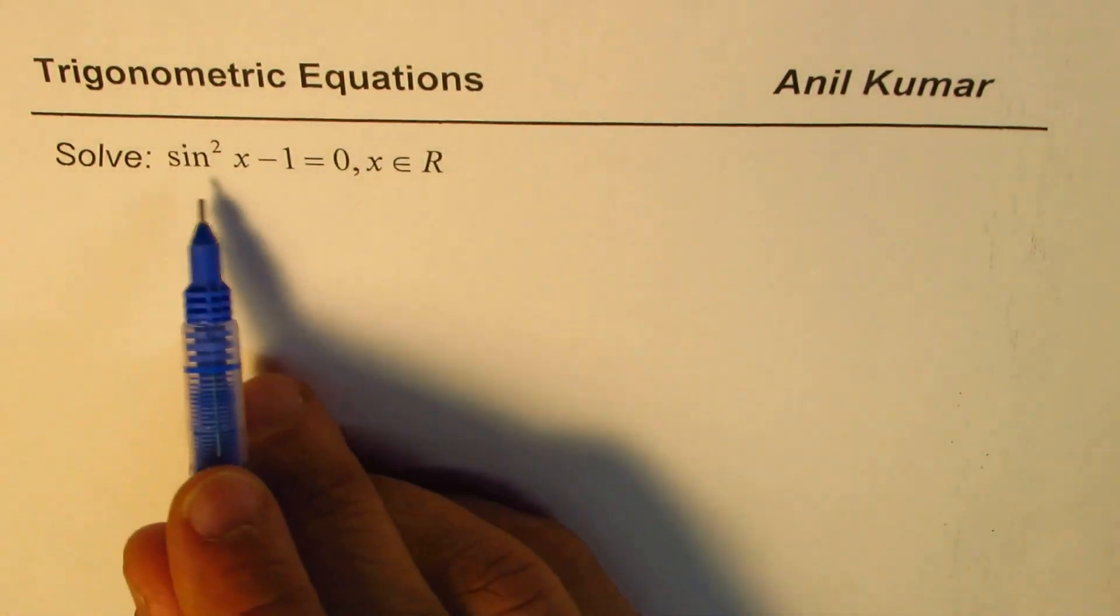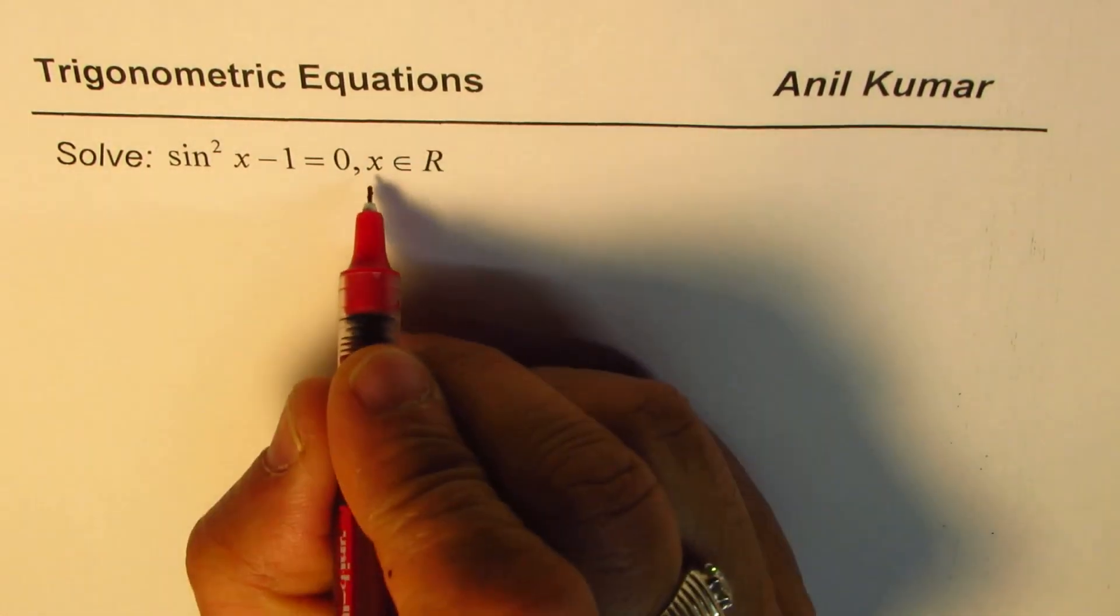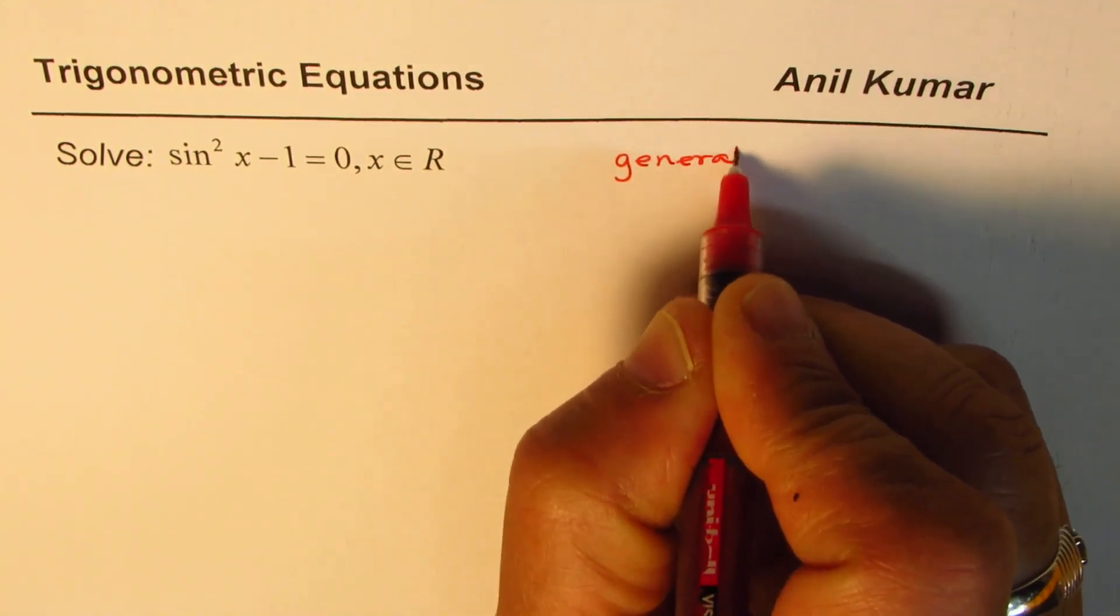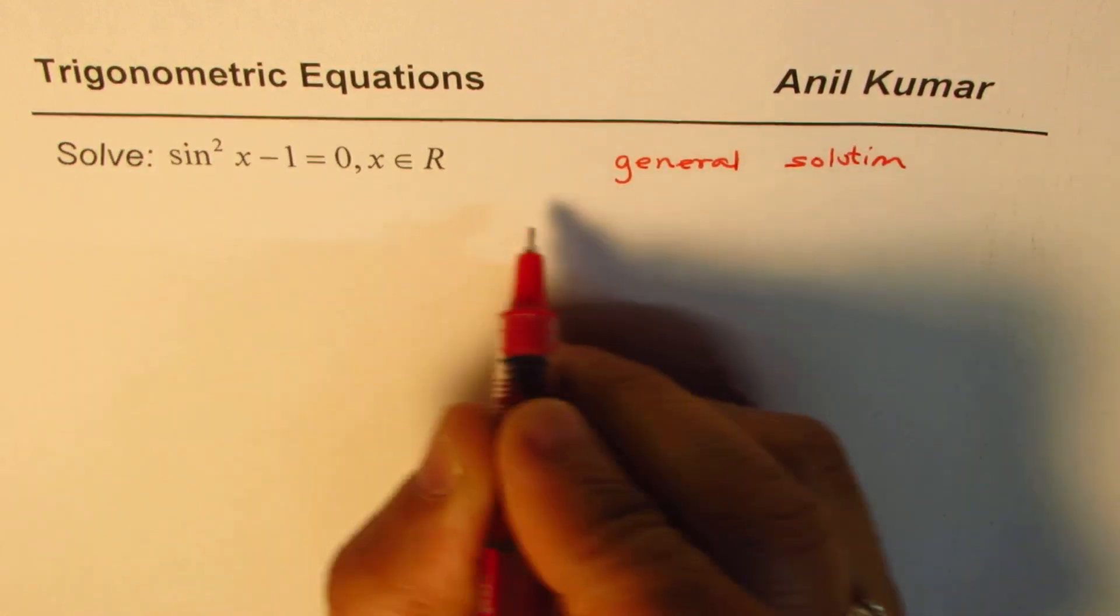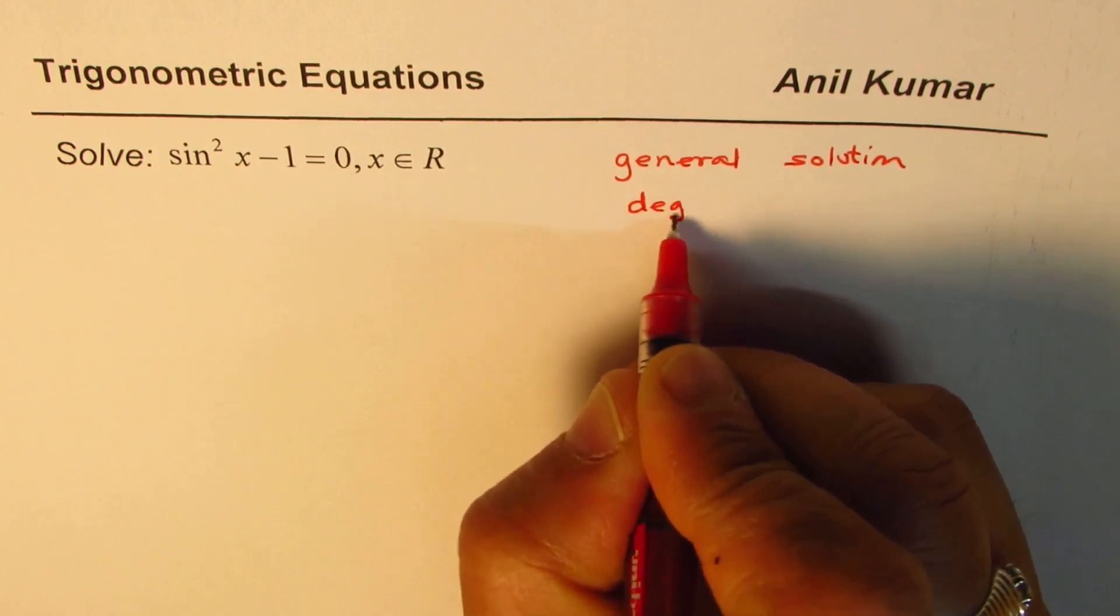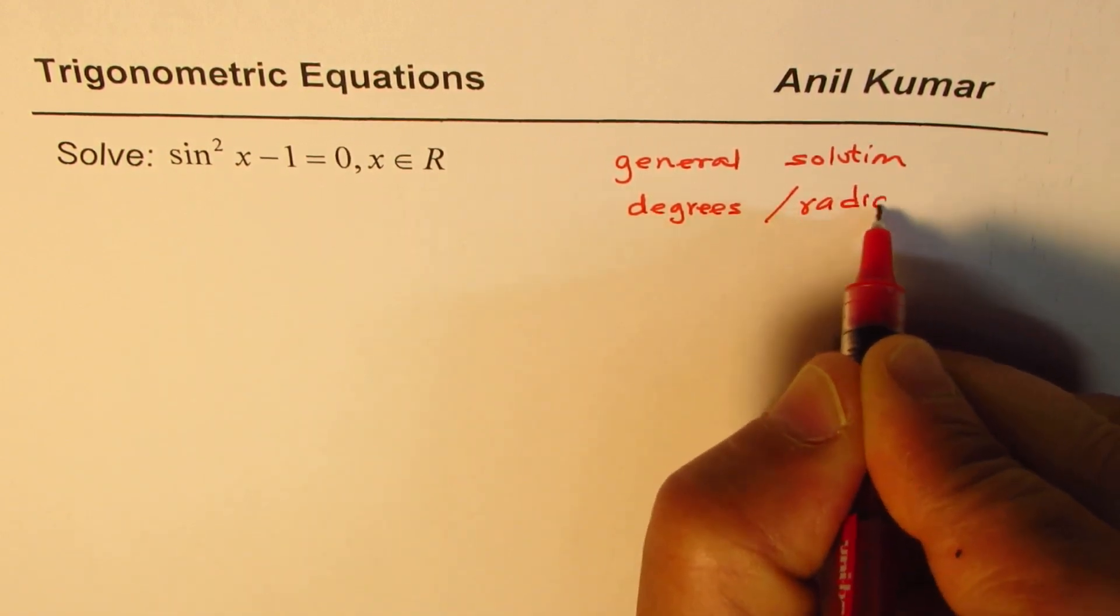Now, when you are given an equation like this, we are looking for general solution. X belongs to real numbers, we are looking for general solution. This solution could be given in both degrees or in radians. That is your choice.